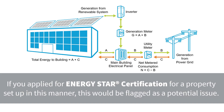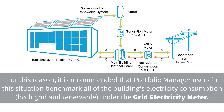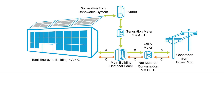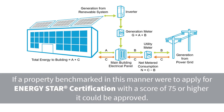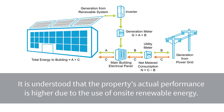If you applied for Energy Star certification for a property set up in this manner, this would be flagged as a potential issue. For this reason, it is recommended that Portfolio Manager users in this situation benchmark all of the building's electricity consumption, both grid and renewable, under the grid electricity meter. This is a conservative approach, as it keeps the property from receiving the credit associated with on-site renewable electricity as compared to grid electricity. But if a property benchmarked in this manner were to apply for Energy Star certification with a score of 75 or higher, it could be approved, since it is understood that the property's actual performance is higher due to the use of on-site renewable energy.